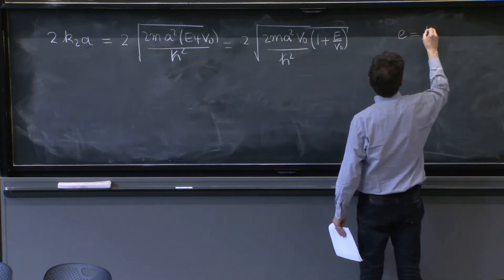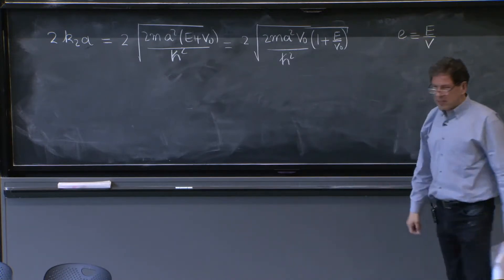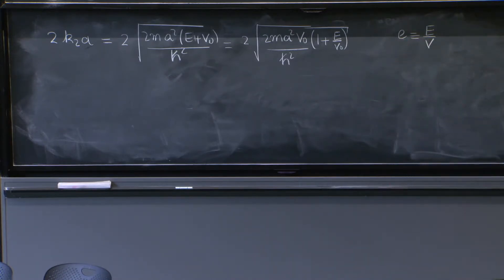First, define a unit-free energy. So the energy is now described by this little e without units that compares the energy of your energy eigenstate to the depth of the potential. So it should be over v0.